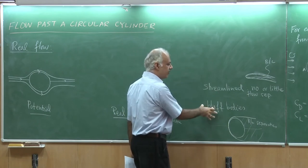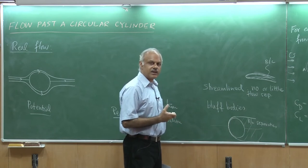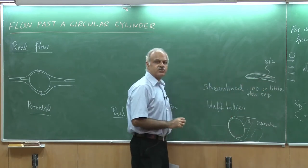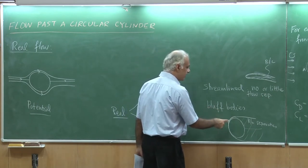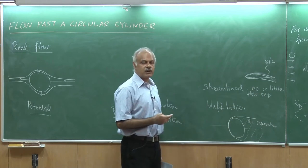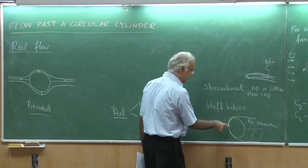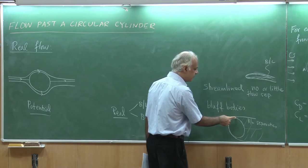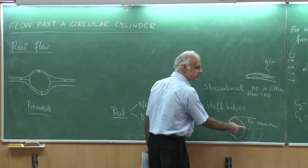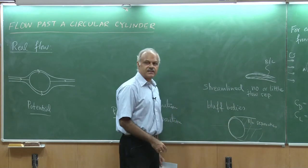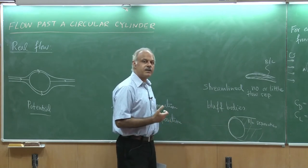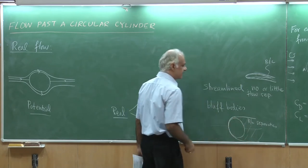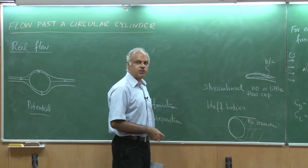In both streamlined and bluff bodies in real flow, we always get a boundary layer — that is common. In a streamlined body, the boundary layer stays attached. In a bluff body, because of the very large adverse pressure gradient — remember Cp was 1 at stagnation, minus 3 at the shoulder — the fluid element goes from minus 3 to plus 1. The fluid element may not be able to overcome the high adverse pressure gradient, so it separates. Once the flow separates, the pressure distribution changes and you could also get pressure drag.